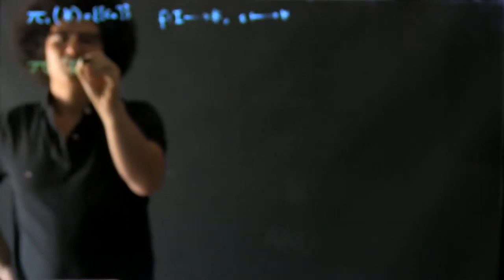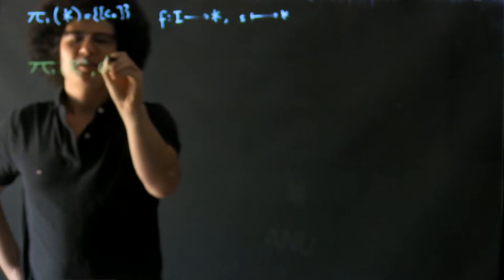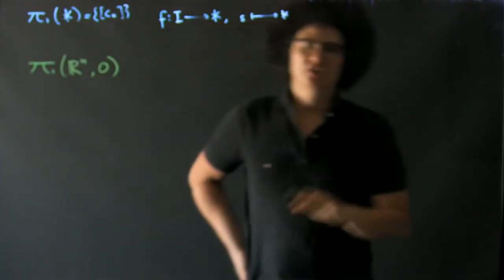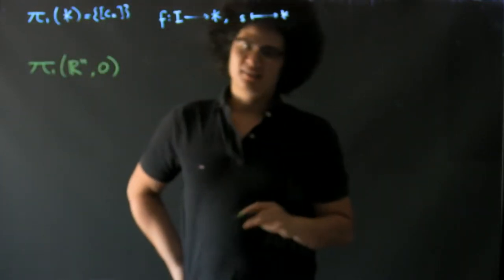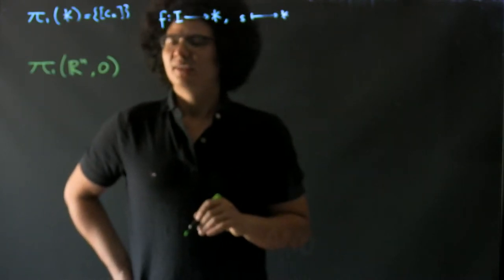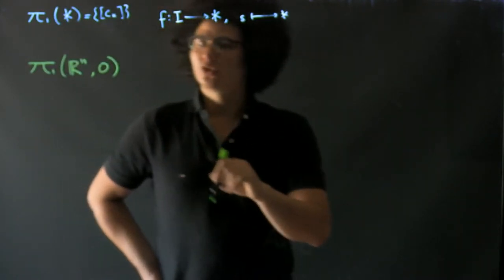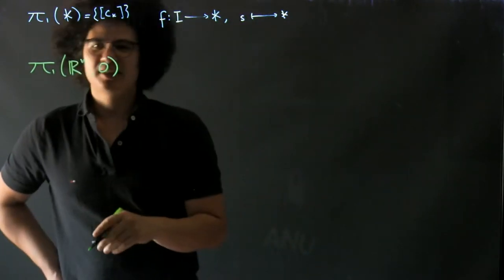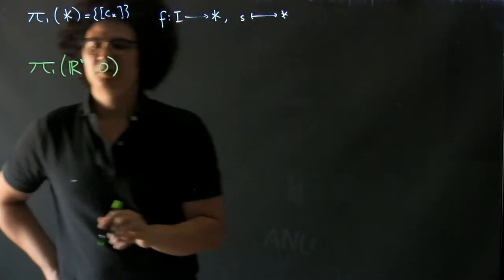Let's next calculate the fundamental group of Euclidean space, say with the base point at the origin. R^n is path connected, so given any two loops, there are in particular paths that have the same start and end point.